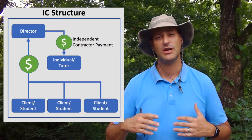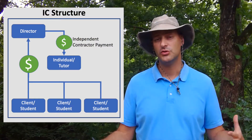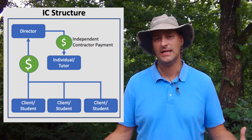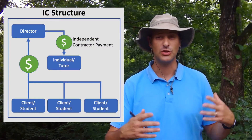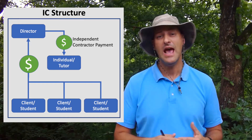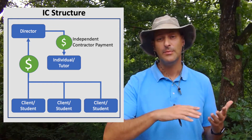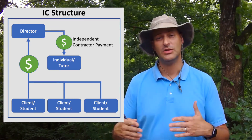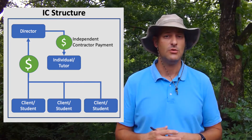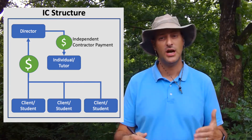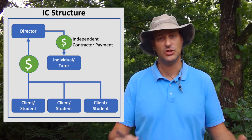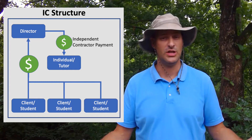So independent contractor versus licensee — what's the structural difference from a financial standpoint? In the independent contractor structure, you have a bunch of students or clients who pay an overall director or a company, and then that company directs some payment to an individual that they call an independent contractor, and they pay them to provide services to the underlying clients.